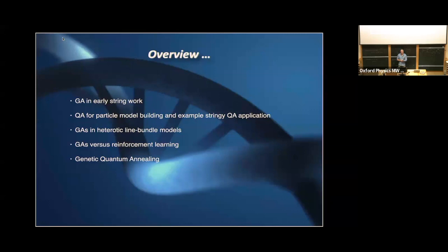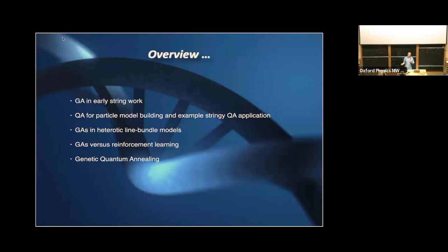Then I'll talk about genetic algorithms in a heterotic line bundle model — those models have a much larger search space — so we can start to see how they operate in search spaces which can be huge. I'll also talk about how they compare with reinforcement learning, which is a nice overlap with what was discussed in the previous lecture. And if I have time, I'll talk about our recent ideas about combining quantum annealing and genetic algorithms.